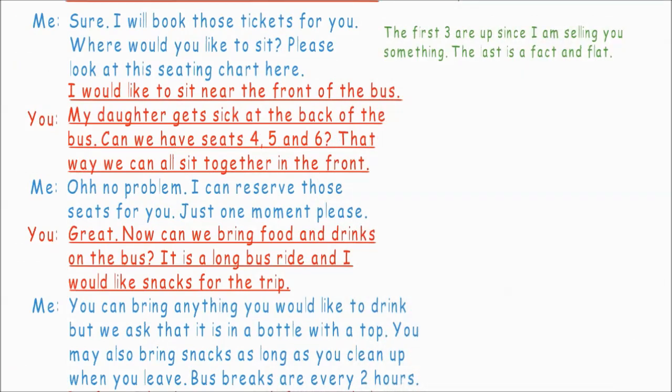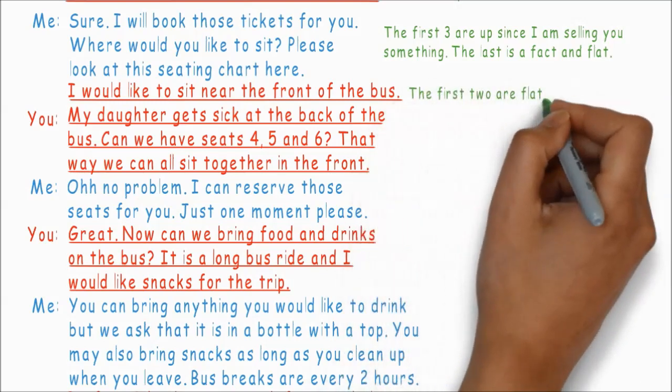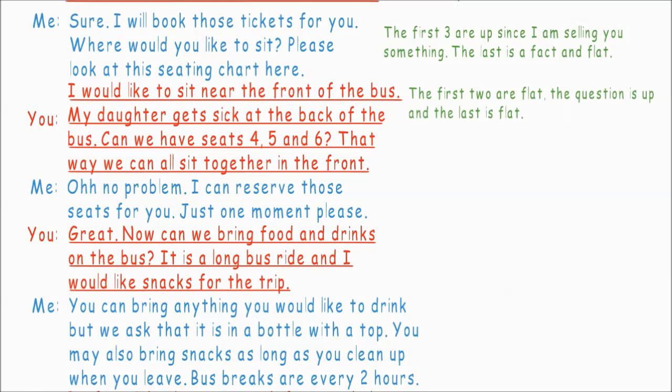Sure, I will book those tickets for you. Where would you like to sit? Please look at this seating chart here. The first three are up since I'm selling you something. The last is a fact, and it's flat. I would like to sit near the front of the bus. My daughter gets sick at the back of the bus. Can we have seats three, four, five, and six? That way, we can all sit together in the front. The first two are flat, and the question is up, and the last is flat.